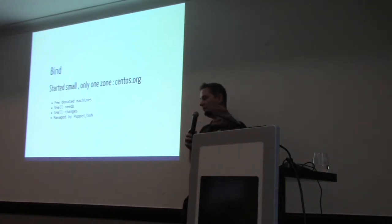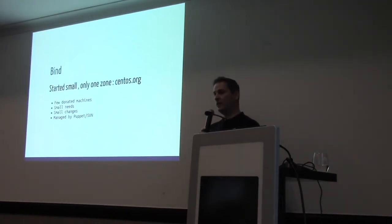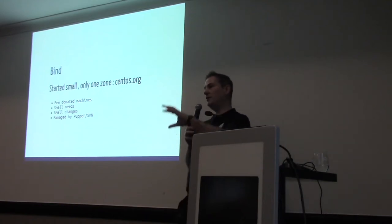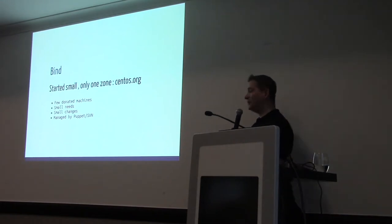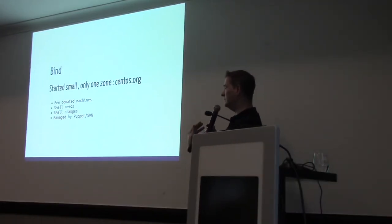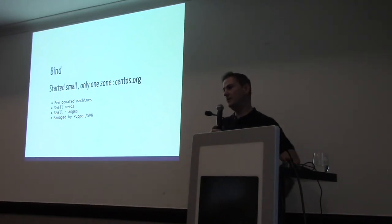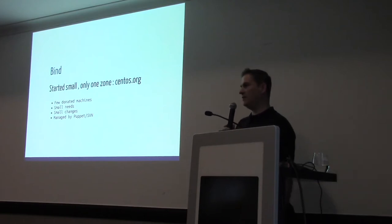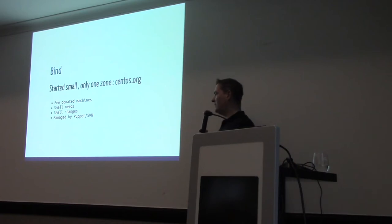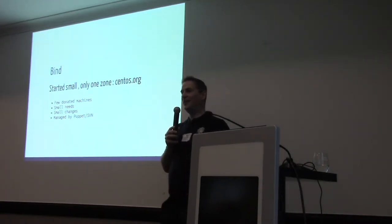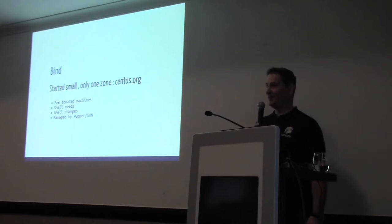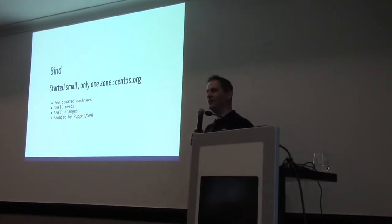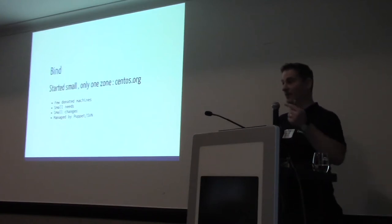The history of CentOS infra is that we got everything donated to us — one machine donated by a company, then another one. We started really small. At one point we decided to move to Puppet to manage things instead of editing manually. We were using Puppet 0.23 and Subversion. For the rest of the room: there was something before Git — Subversion. Or even before Subversion. We can discuss that.